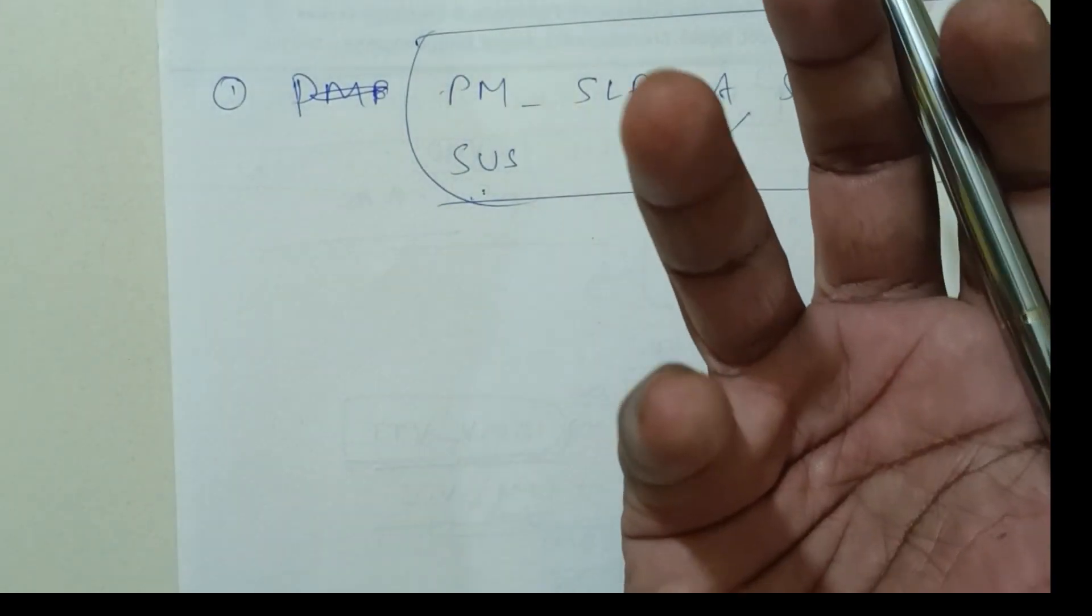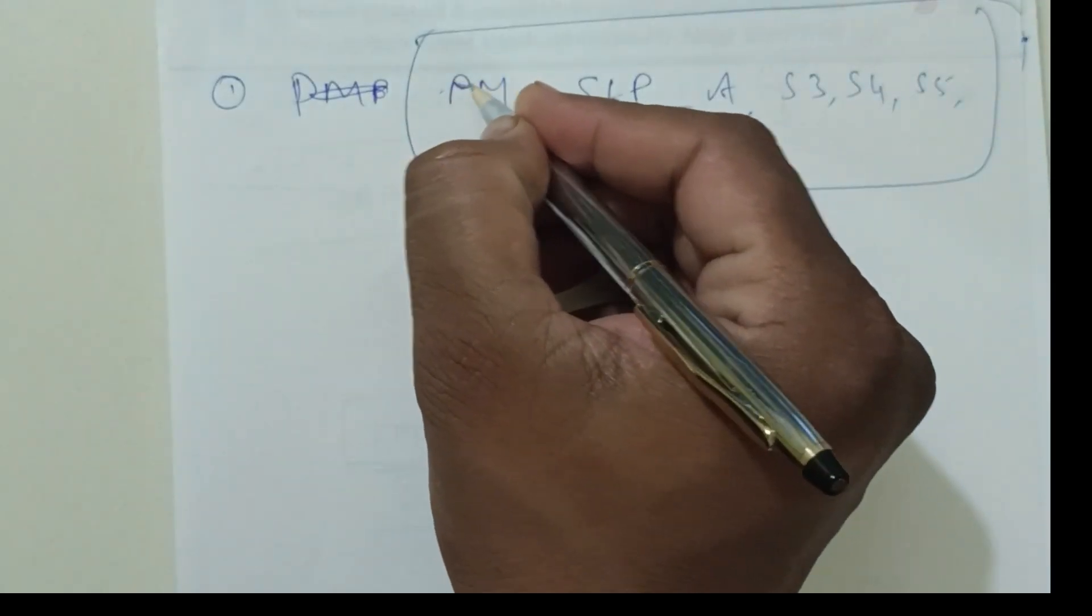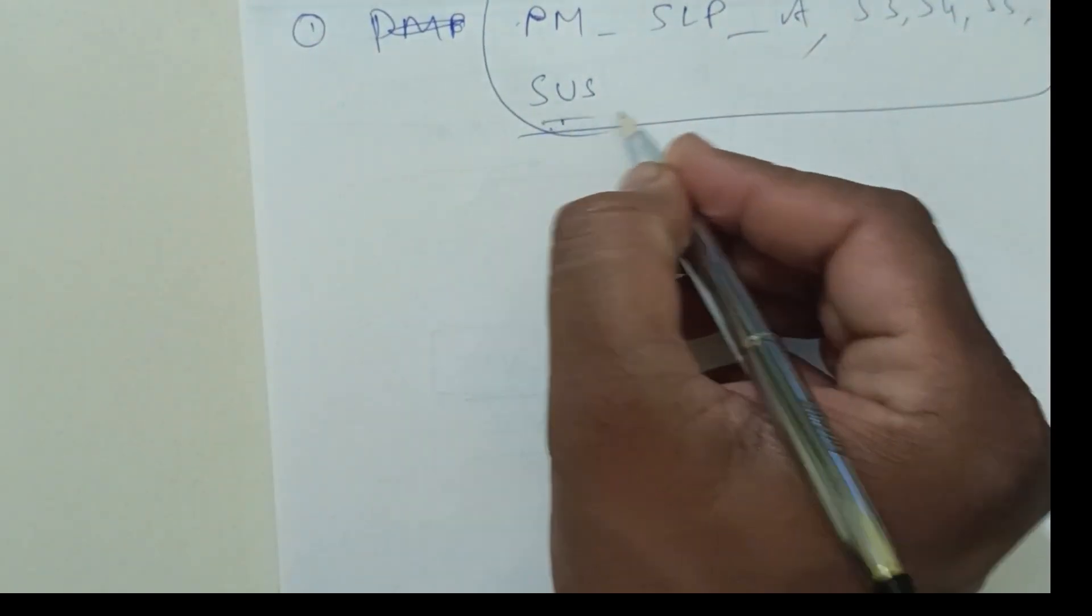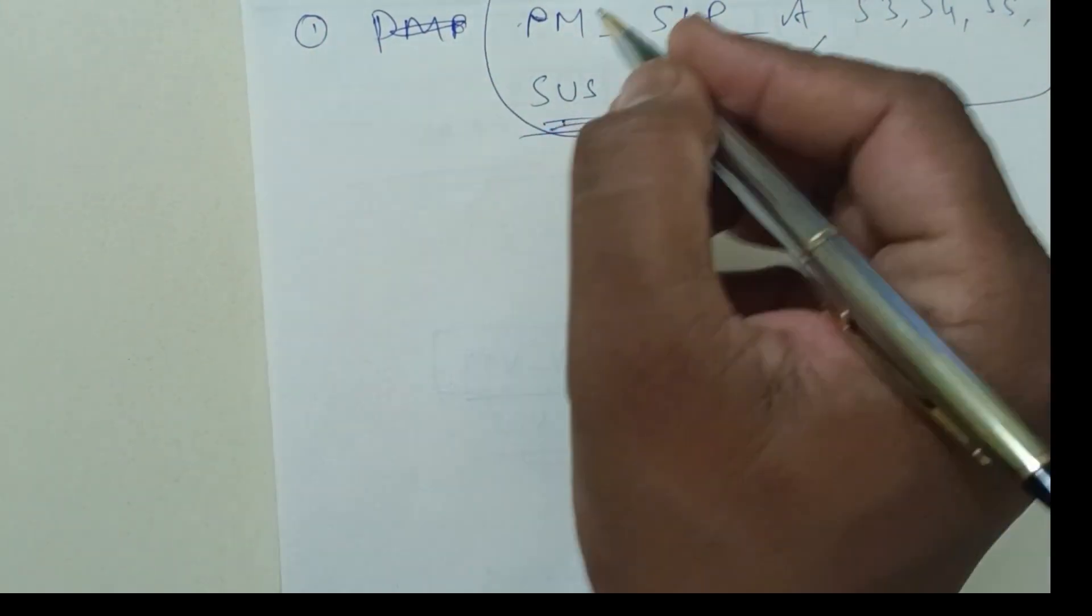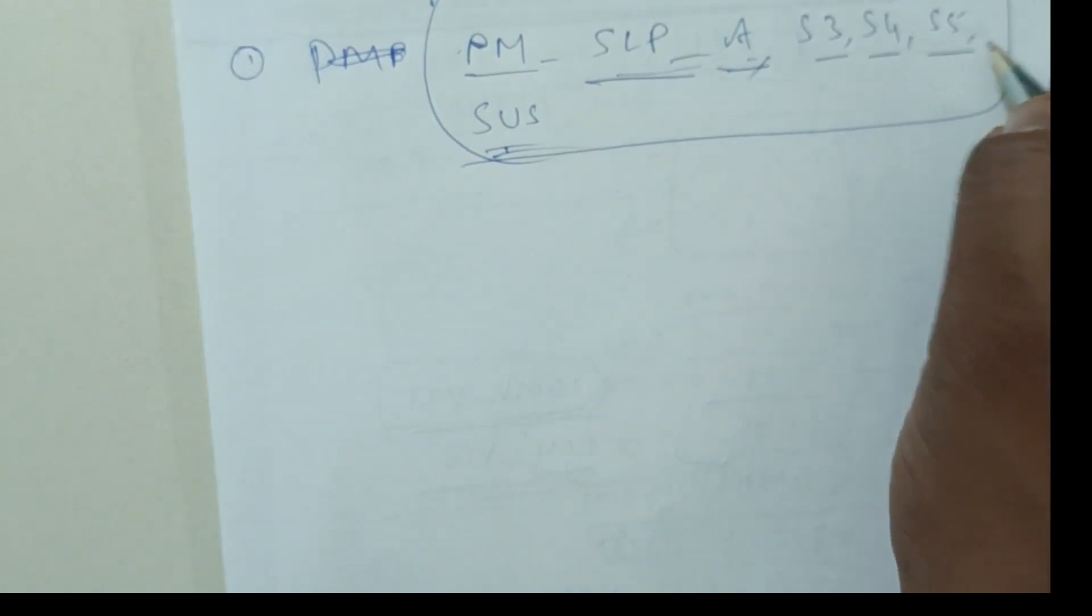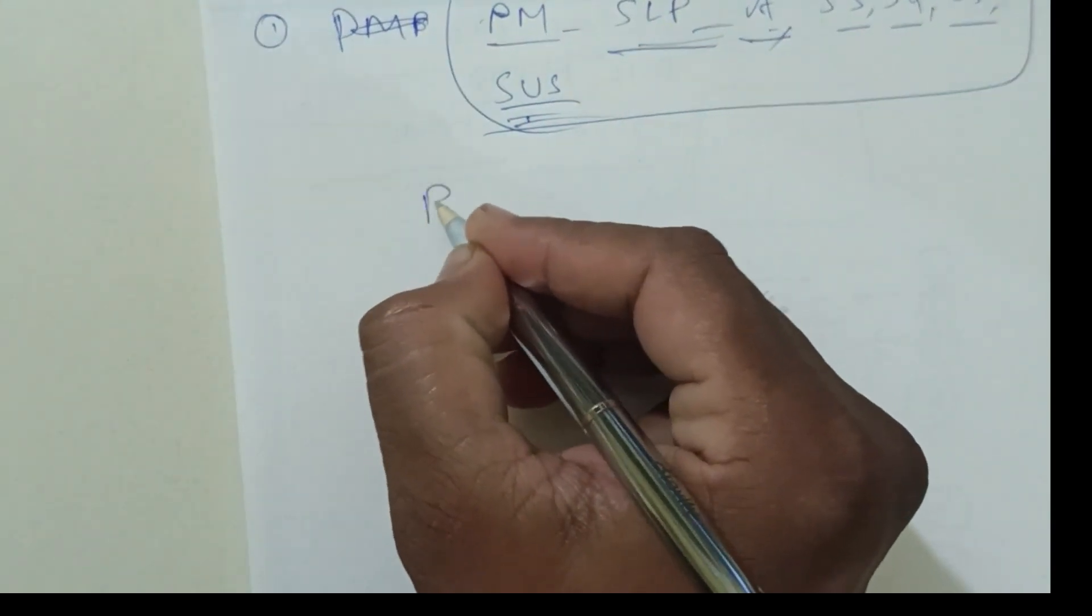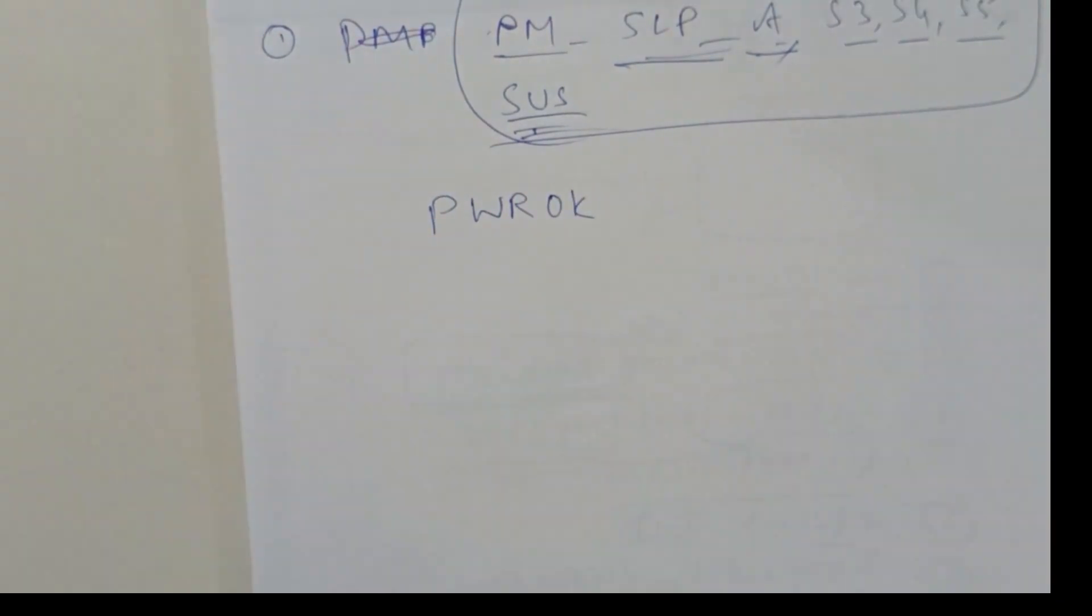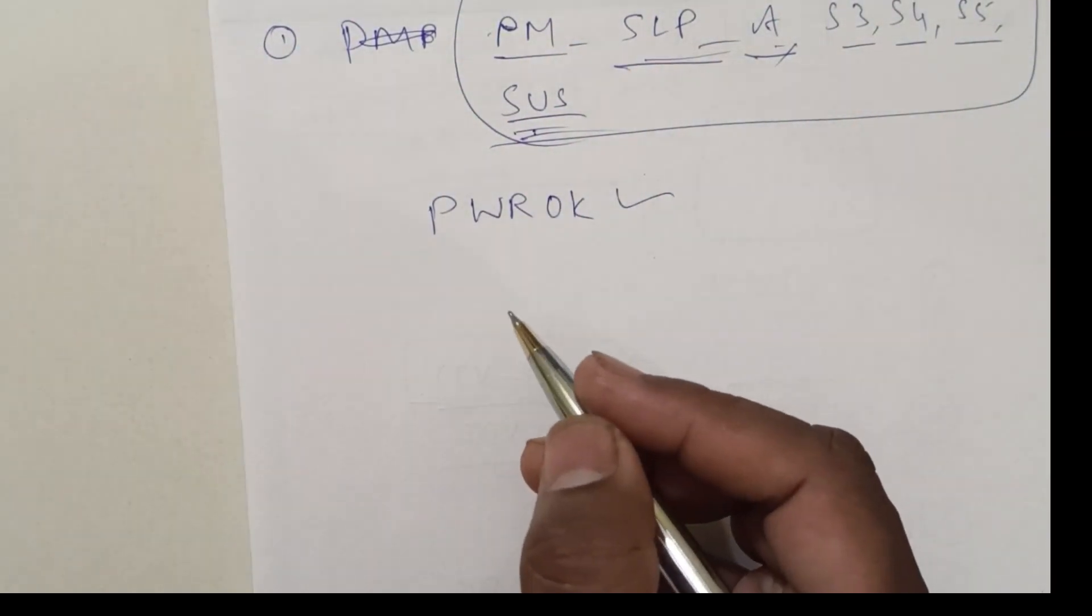This is only the introduction of PCH, what are the voltages it contains. These are voltage classes, so one by one I am going to explain. Even next chapter will be processor voltages. Now, it's PM SLP SA, S3, S4, S5, and SAS. Next, major voltage is power. This is also very important voltage.